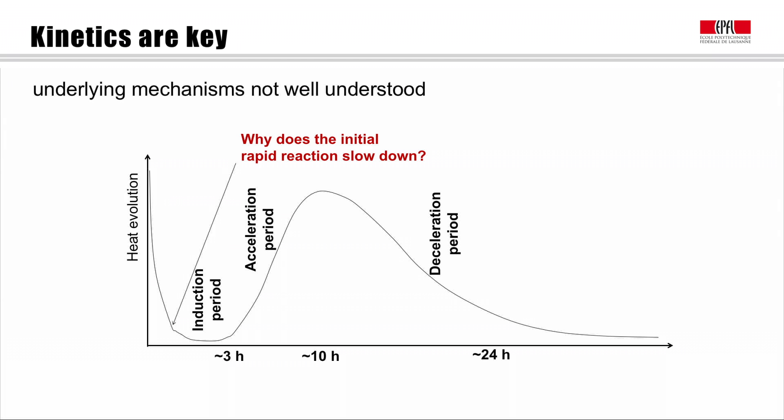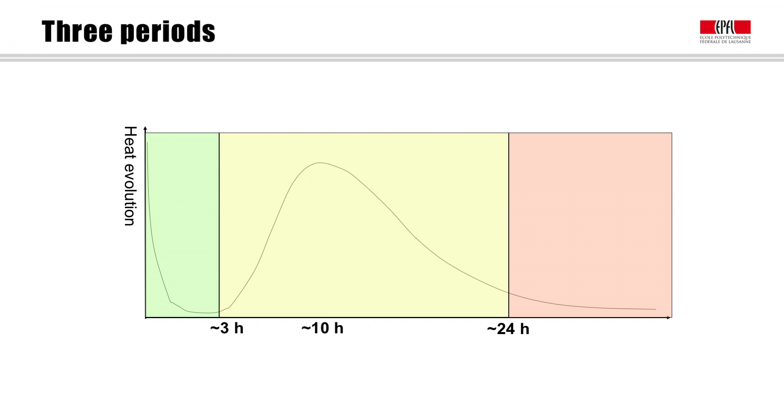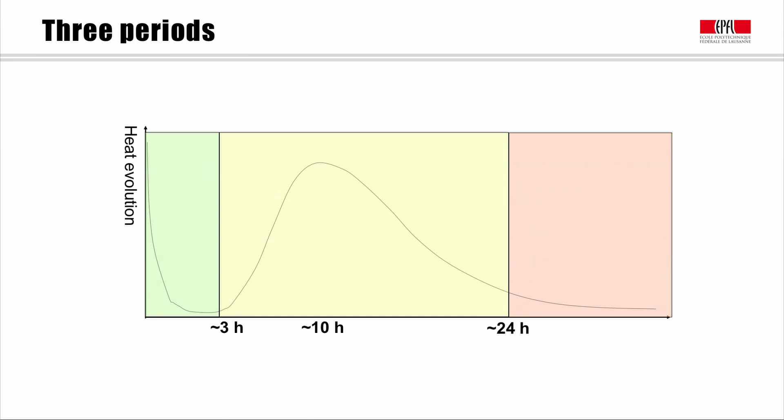And in particular, in terms of these kinetics, there are two questions that have occupied researchers. First of all, this initial slowdown. Why do we get this initial slowing down? And then why do we get this second slowing down for the deceleration period? In these modules we're going to look individually at three separate periods. We're going to look at this first period of the initial heat evolution and the induction period, then we're going to look at this main heat evolution peak here, and then we're going to look at the slow ongoing reaction. There's quite a lot happening in this final period.